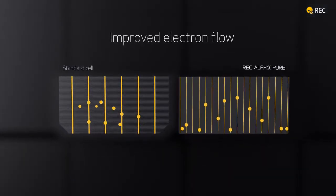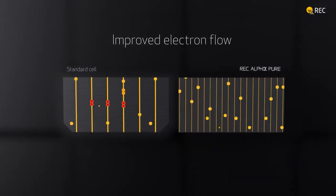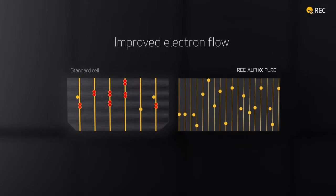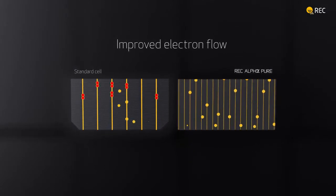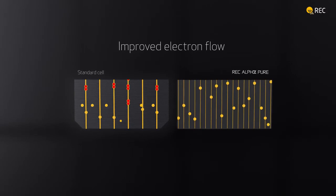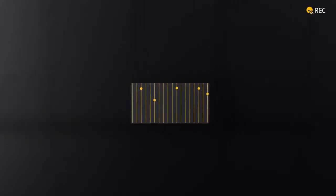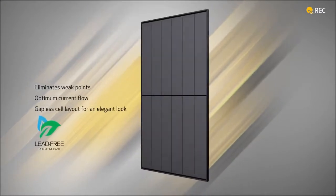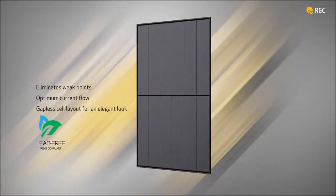Our advanced connection technology adds more contact points to the cell, reducing electron congestion for optimum power delivery. What's more, these wires are much thinner than the bus bars on standard panels, making the REC Alpha Pure a thing of beauty with beast levels of power.